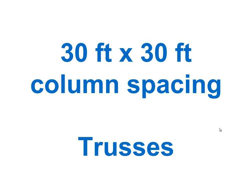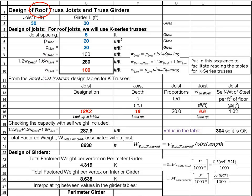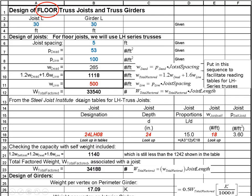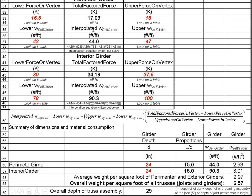We did the sizing for a 30-foot by 30-foot column spacing and also for a 40-foot by 40-foot column spacing. For the 30x30 grid: the roof joist was an 18k3 at 6.6 pounds per foot, the perimeter roof girder was 12.2 pounds per foot, and the interior roof girder was 22.8 pounds per foot. For the floor, we got a 28LH08 at 18 pounds per foot, with perimeter girder at 44 and interior girder at 90.3 pounds per linear foot.